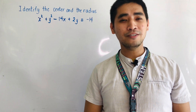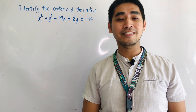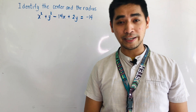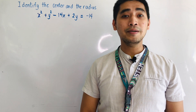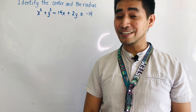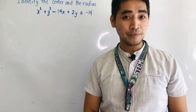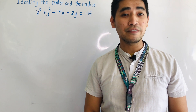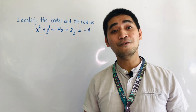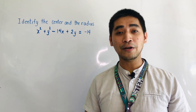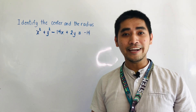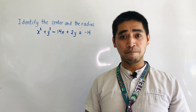Last time, we were able to discuss different examples and problem solvings involving circles. Today, we will be discussing an equation involving circles again, but this time we will be using another solution which is completing the square, to identify the center and the radius of the circle.